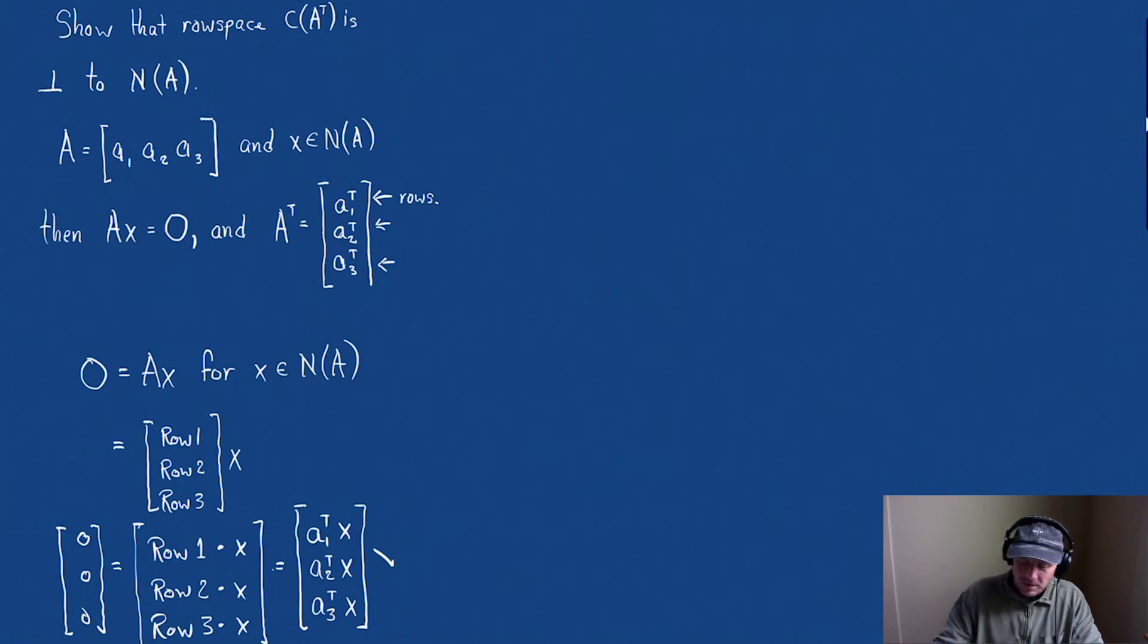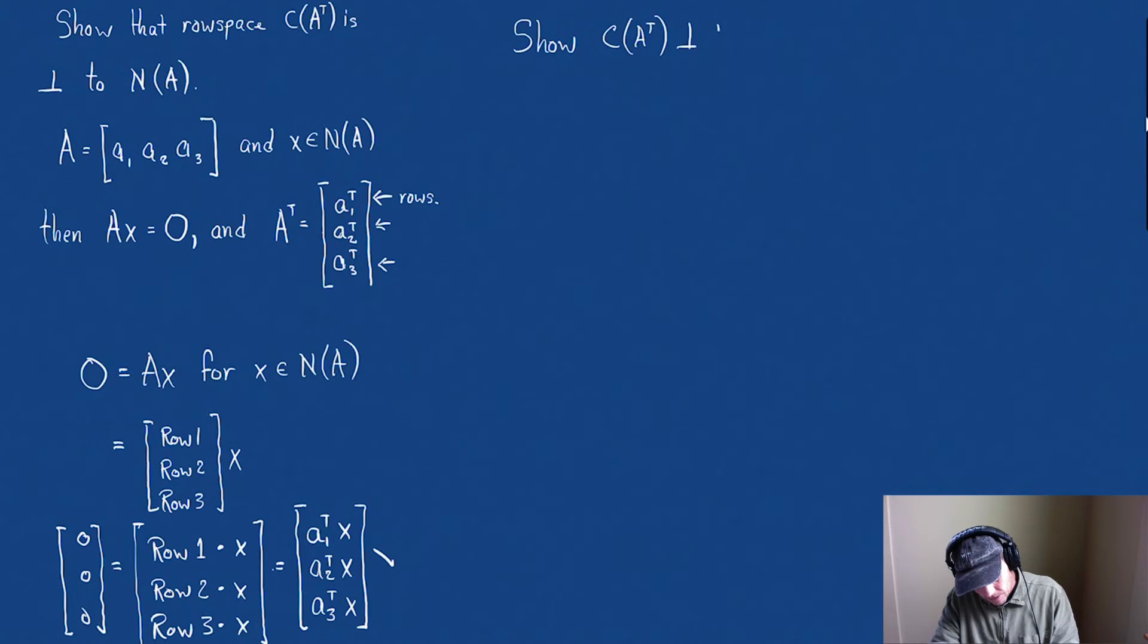Now, there's another way to write this. And let's give that a try. So we're going to do the same one here. And then we'll leave the other two spaces, the column space and the left null space, as an exercise for homework. So how about this? We're gonna show again, show that the row space, column space of A transpose, is orthogonal to the null space of A.